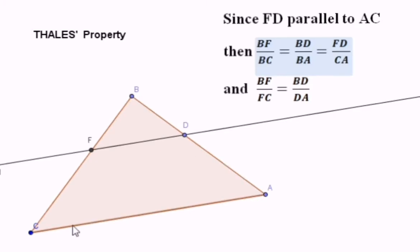So, whenever we have FD parallel to CA, then directly we can say BF over BC is equal to BD over BA is equal to FD over CA. This is Thales' property.